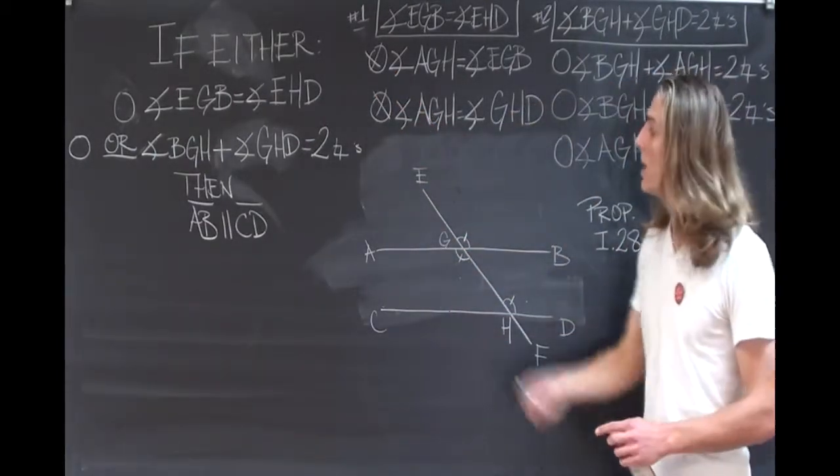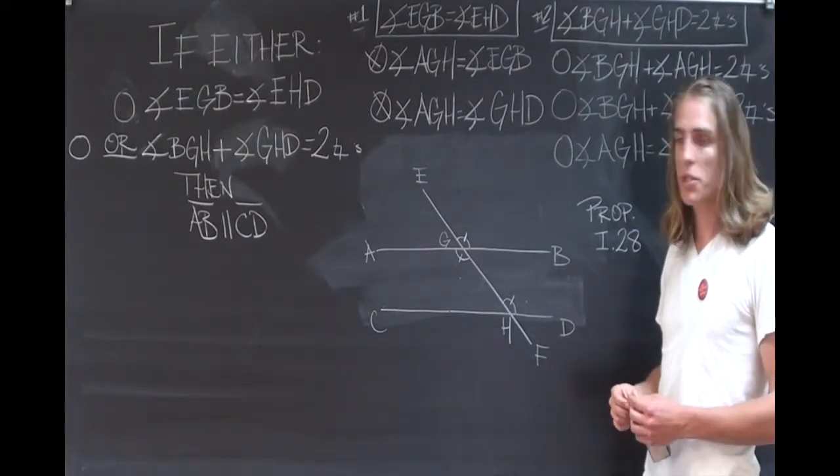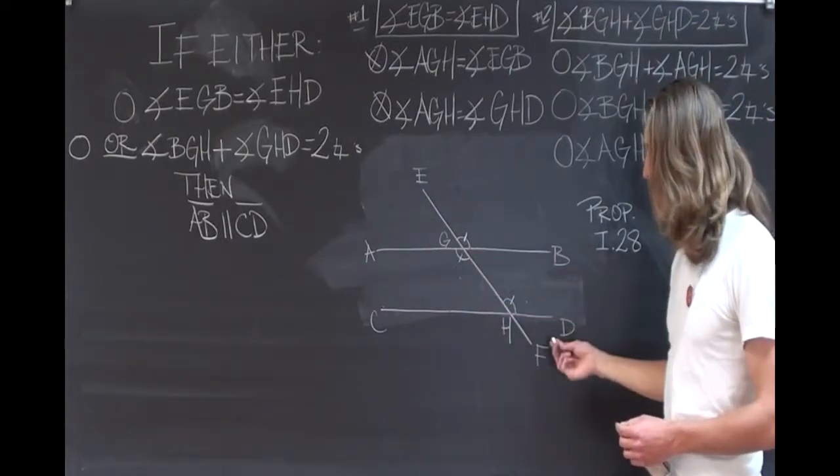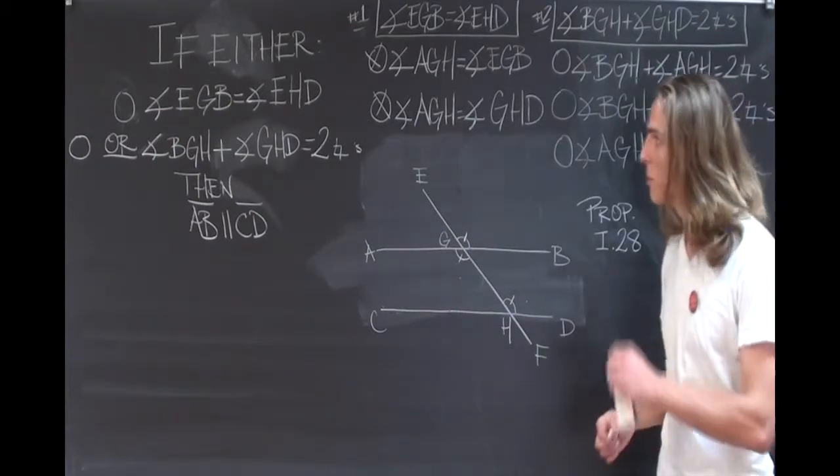Therefore, if the exterior angle, EGB, is equal to the same side interior and opposite angle, GHD, the lines AB and CD will be parallel. That's case number one.